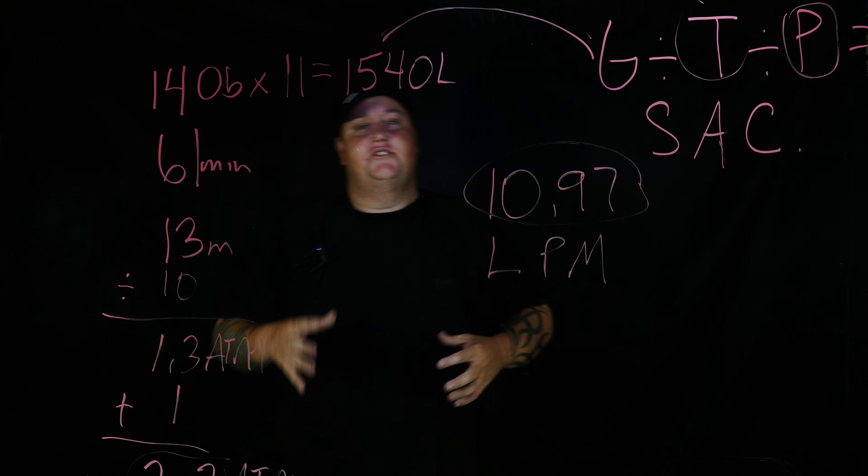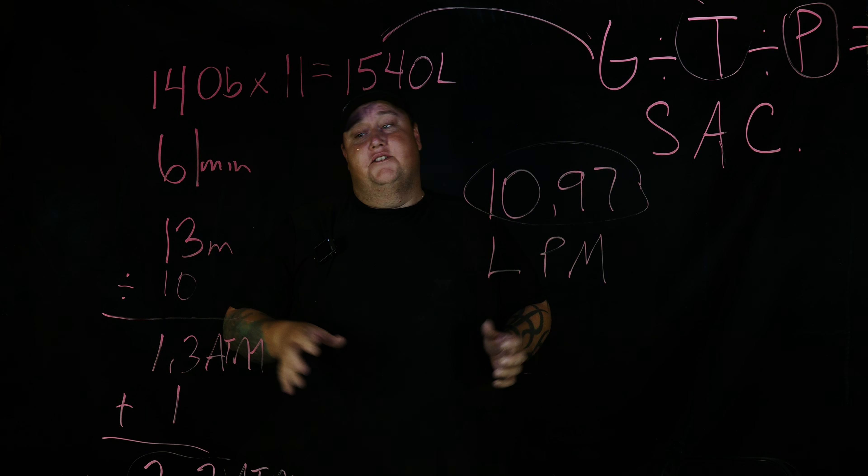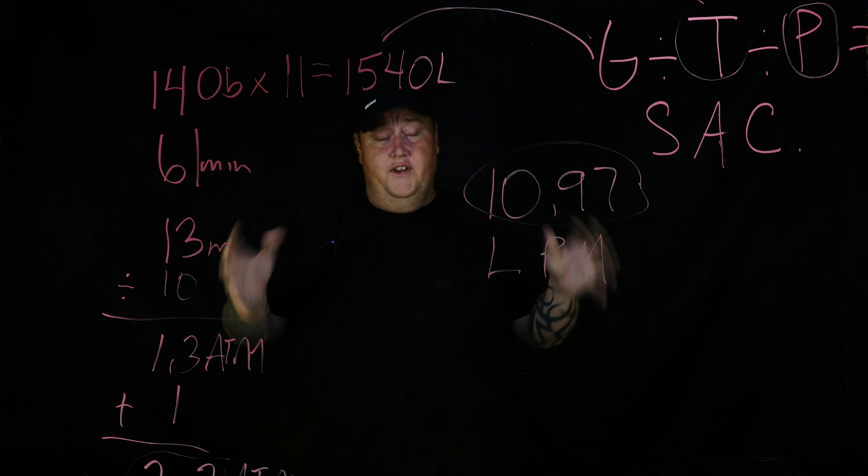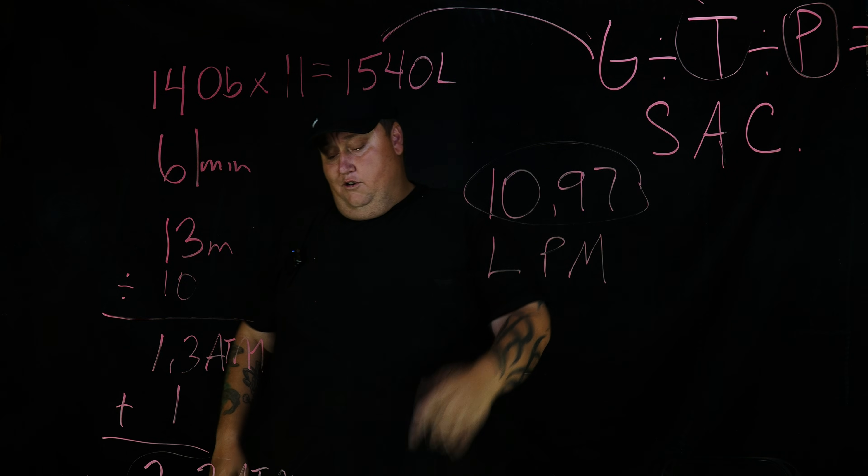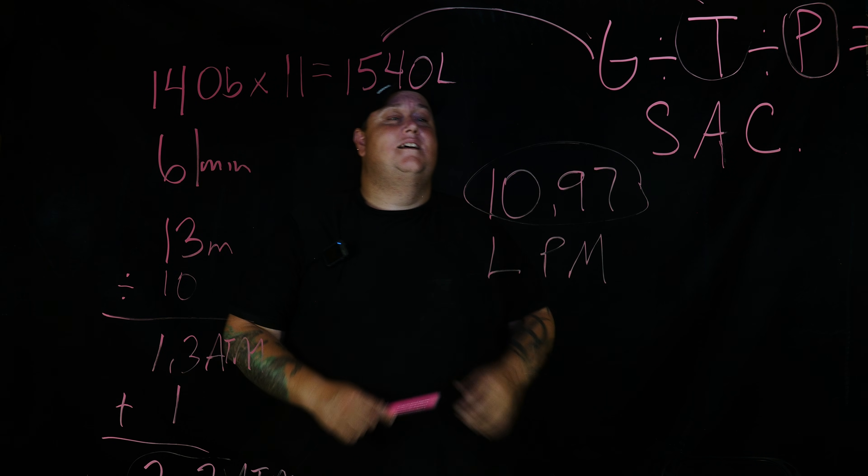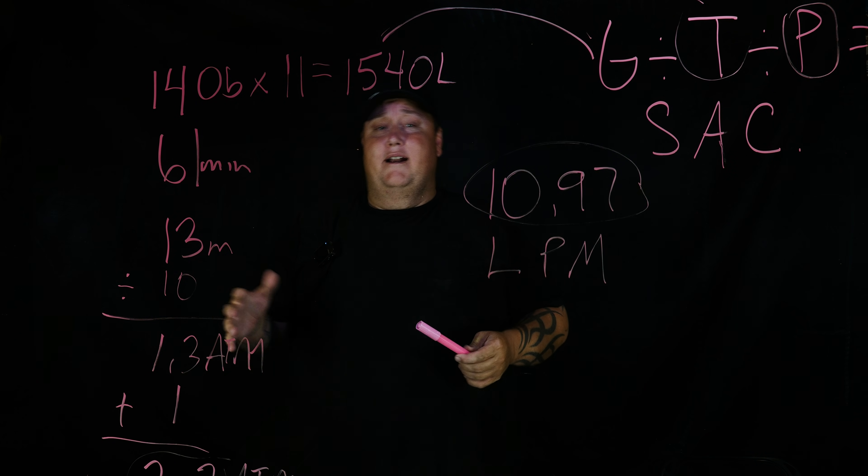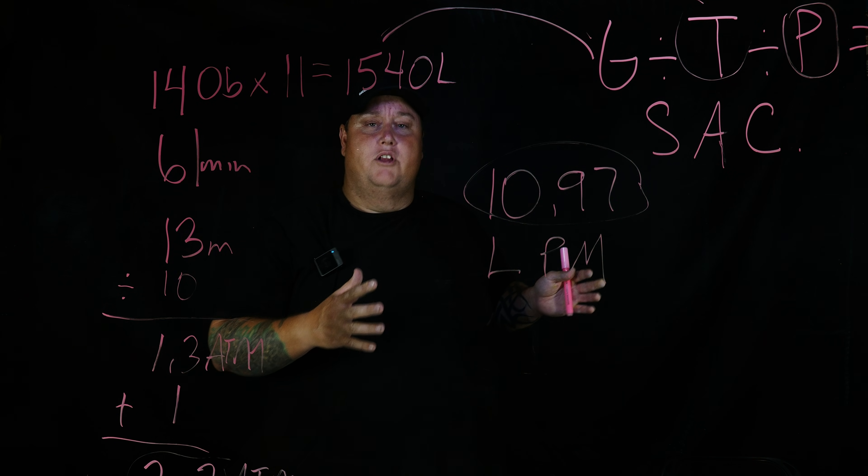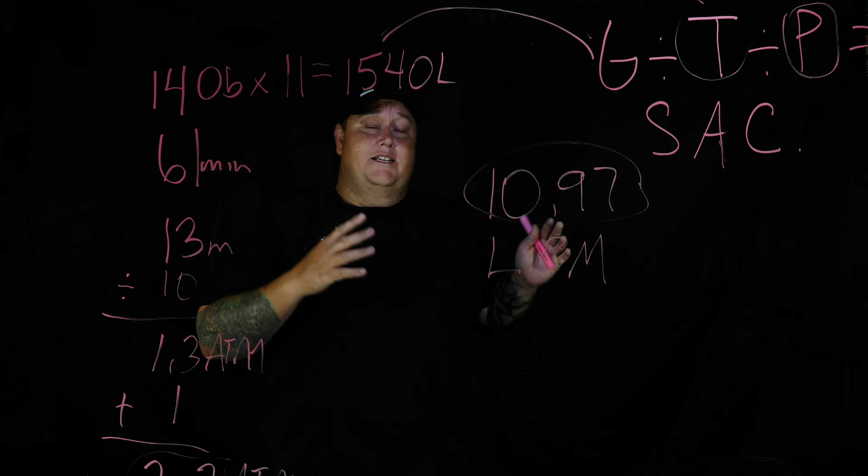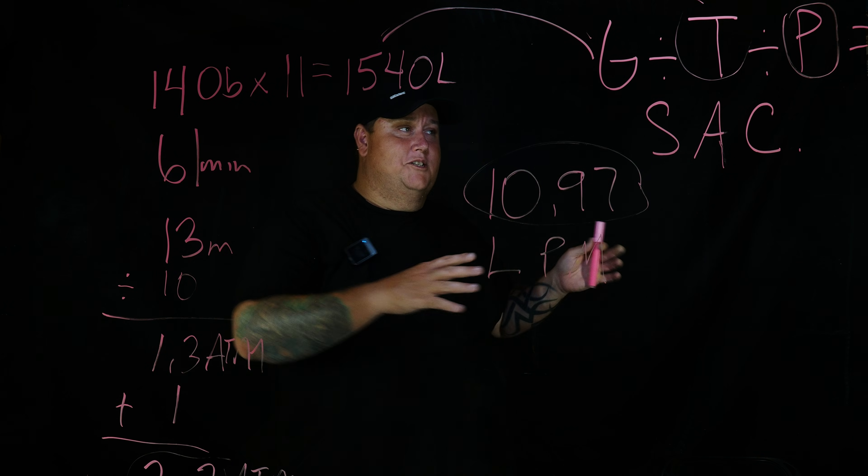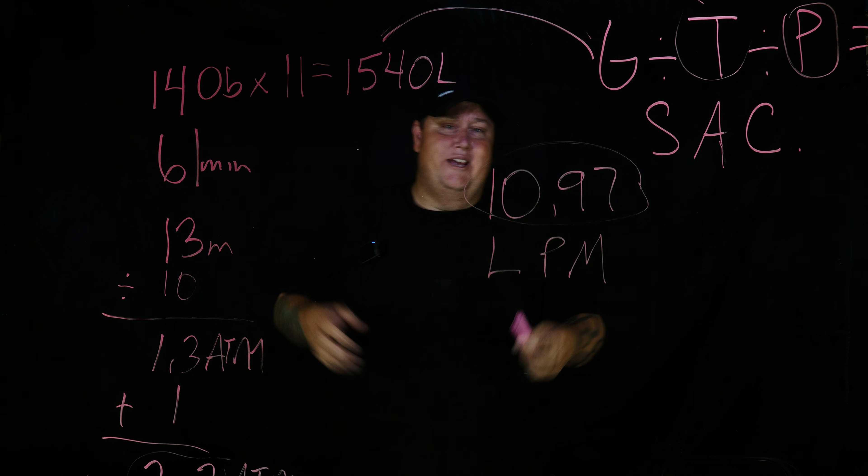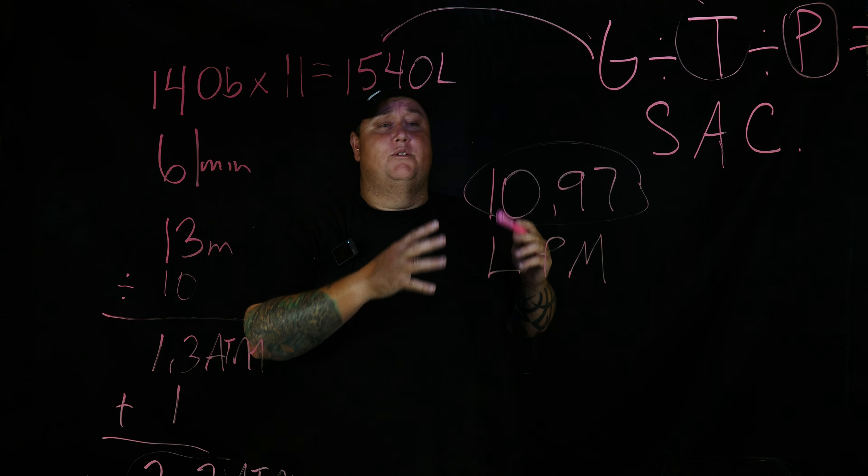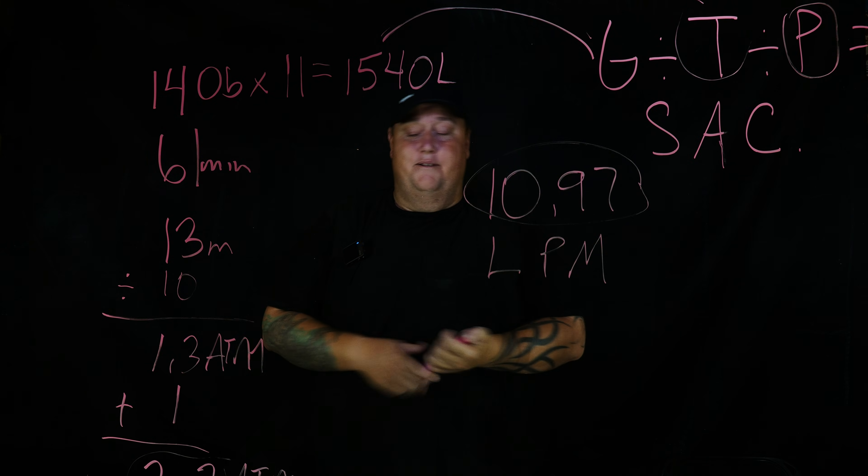Another reason though is we have a lot of divemaster students that are really interested in improving their air consumption. So we get them at the beginning of their training, at the beginning of their divemaster course, to figure out their SAC rate. Maybe it's like 30 or 20 or something, and they write it down in their logbooks. And then at the end of the training, a month or however long it took, we calculate it again and see if they improved. Maybe they went from a 20 to a 15, 20 to 18, whatever. It's a good way, it's a good tangible number to put on your air consumption rate.